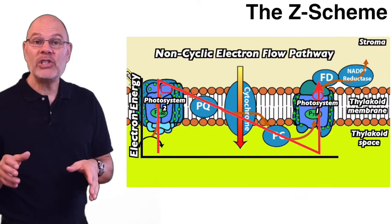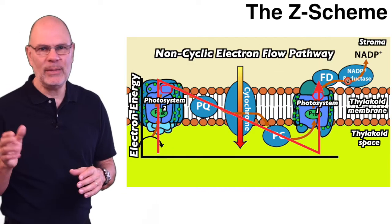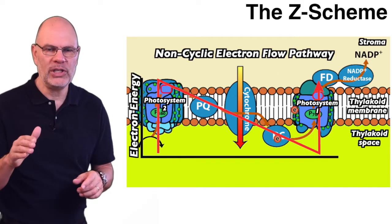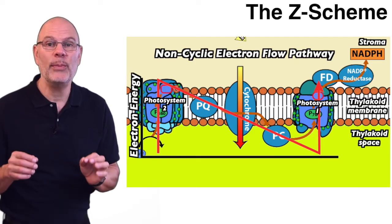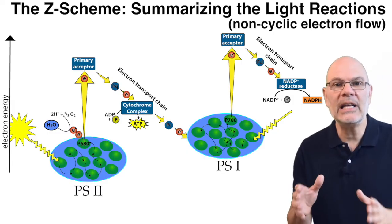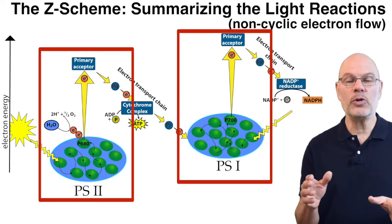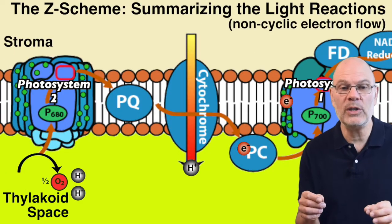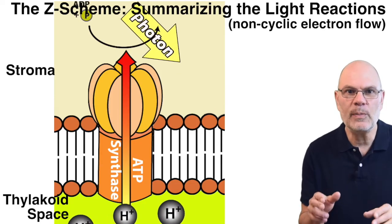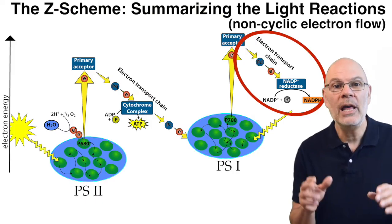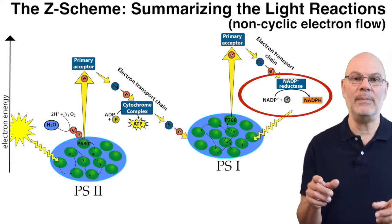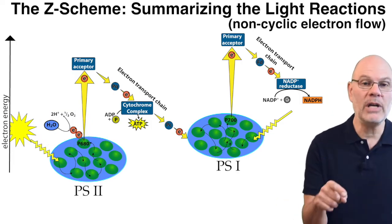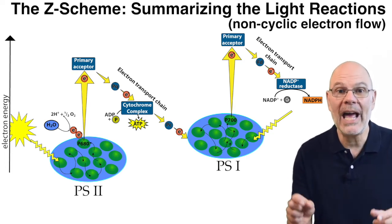Non-cyclic electron flow is also called the Z scheme. If you put a Z on its side, you get the idea — electrons rise in energy in photosystem II, then fall as they go through the electron transport chain of photosystem II, then rise in energy again through photosystem I. To summarize: light is captured by photosystems converting light energy into electrical energy. In photosystem II, the electrical energy pumps protons into the thylakoid space, creating an electrochemical gradient used by ATP synthase to make ATP. In photosystem I, the electrical energy reduces NADP+ into NADPH. The source of electrons is water, which splits into protons — enhancing the proton gradient — and oxygen, which bubbles away as oxygen gas.